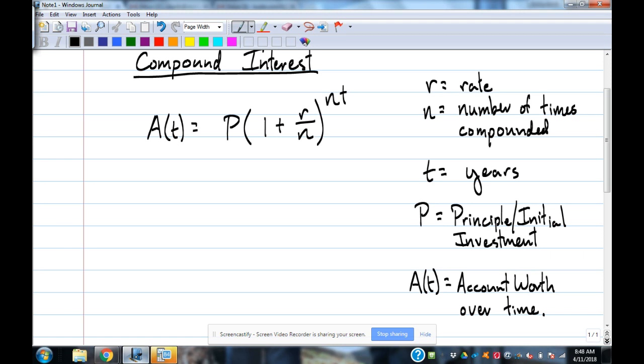All right. So our first financial model we're going to deal with is compound interest. And compound interest is commonly used in savings accounts. If you don't have a savings account, compound interest is used in calculating how much money they're going to put into your account every so often. So there's a formula for it.